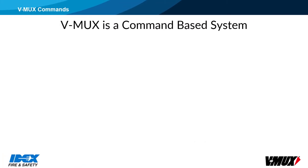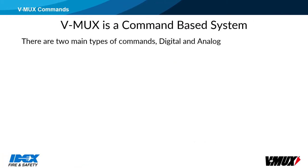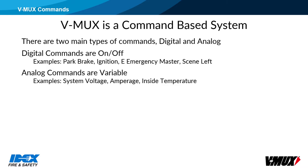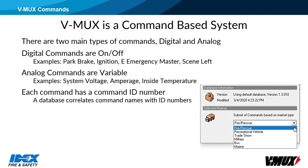VMux is a command-based system. There are two types of commands: digital or analog. A digital command is simply on or off, and an analog command is for variable data, such as temperature or amperage. Each command has a specific command ID number. There is a command database that correlates command numbers to command names. This database is split up into six different markets: fire rescue, recreational vehicle, trade show, military bus, and marine. Our focus will be on the fire and rescue market.